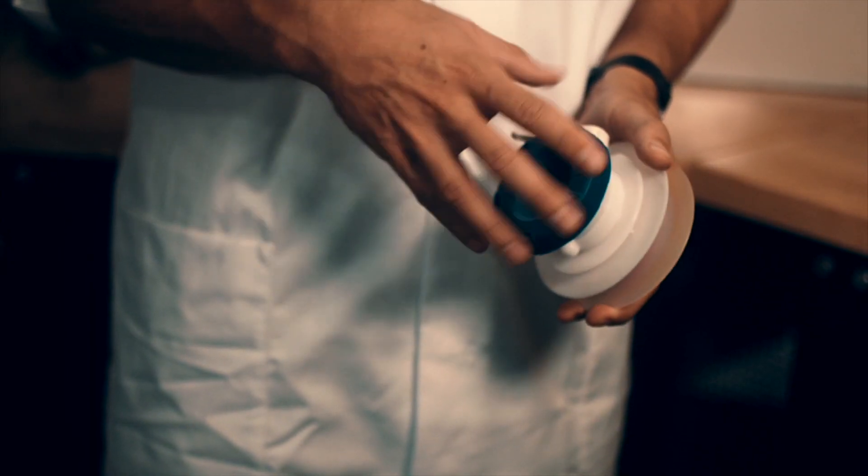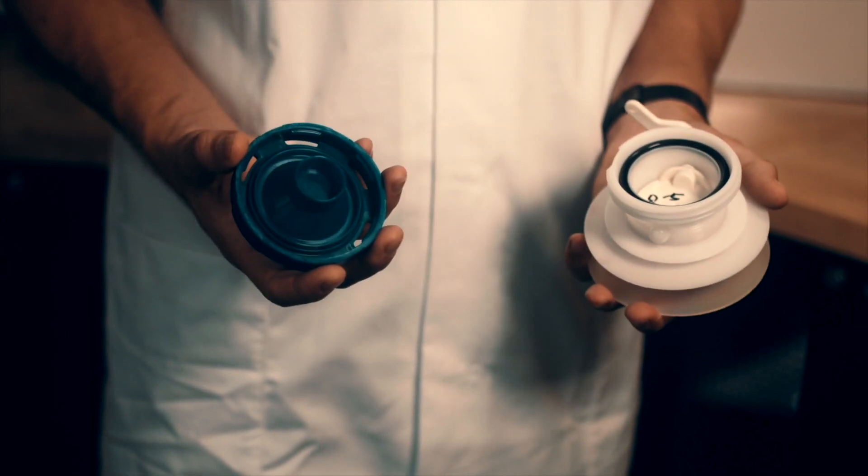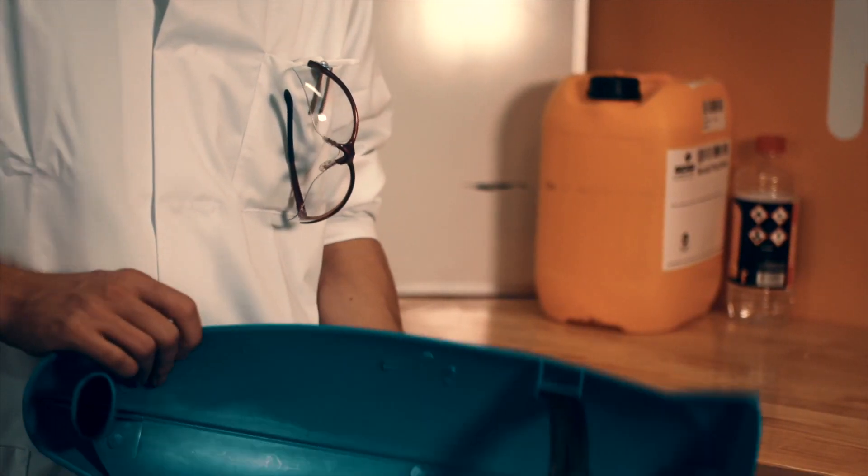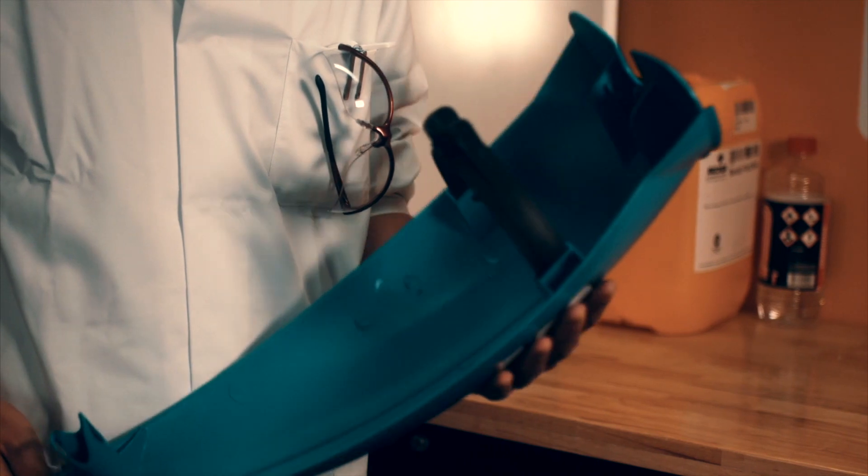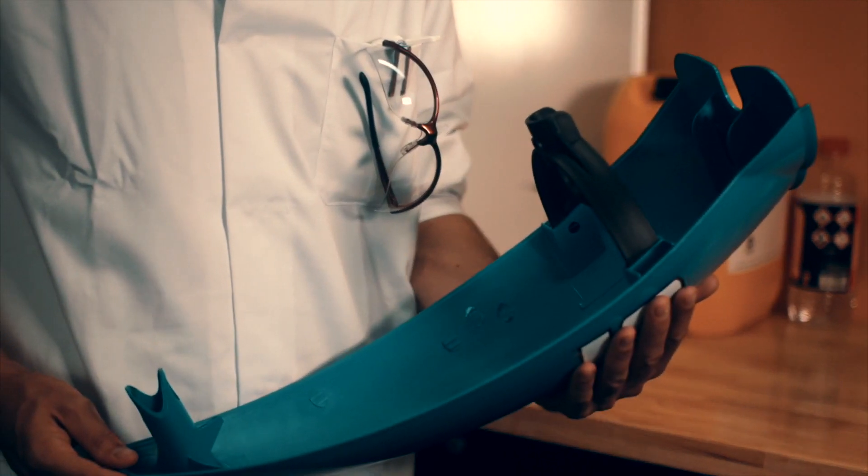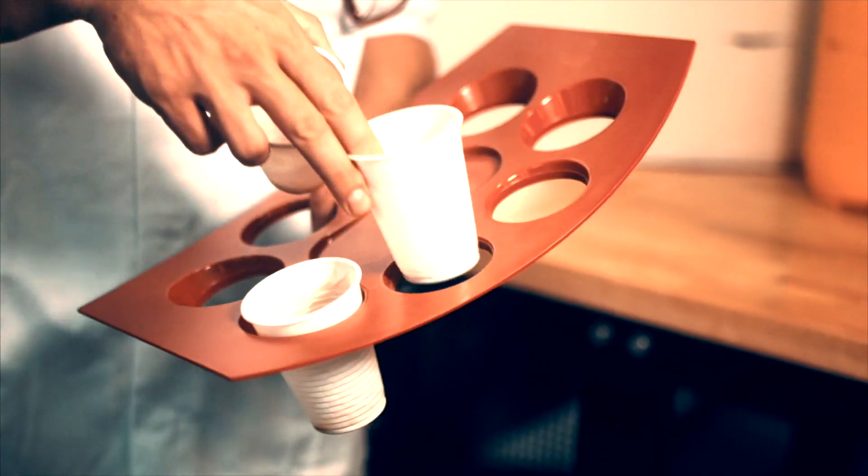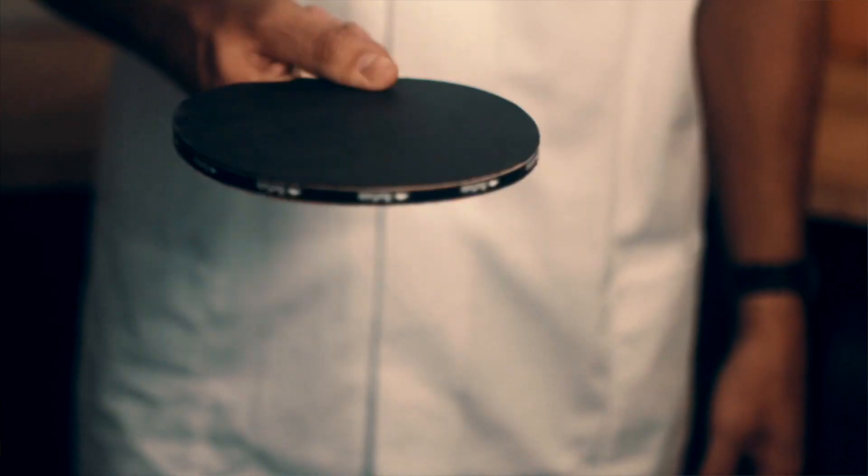One of injection moulding's biggest advantages is that you can produce large volumes of products at high speed, even multiple at the same time. This is difficult to do with metal or wooden products. In addition, you can create almost any shape you desire, thanks to the customised mould.